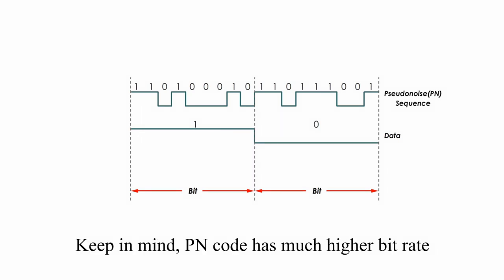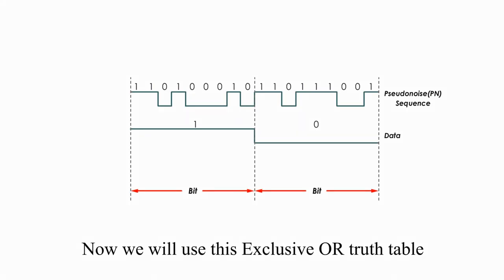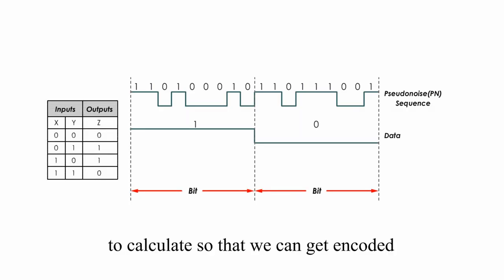Keep in mind, PN code has much higher bit rate than the original data, one and zero. Now, we will use this exclusive or truth table to calculate so that we can get encoded and modulated transmitted signals.